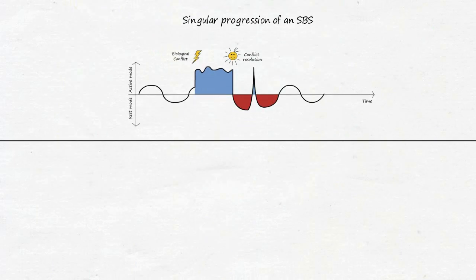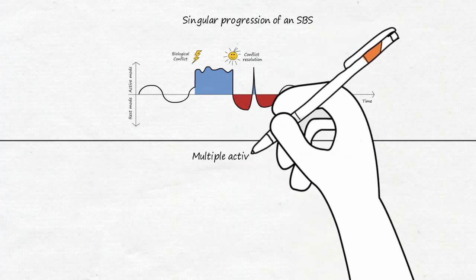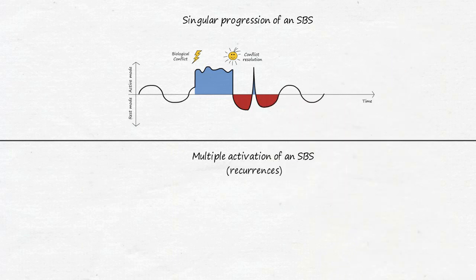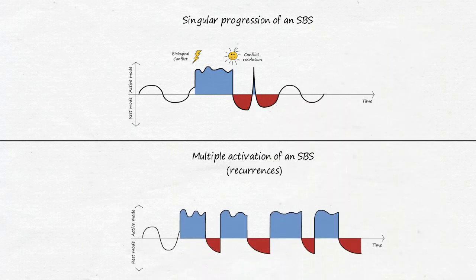Up until now, we have looked at the simple, singular progression, which is more of an exception for humans. With us, the multiple activation of a meaningful biological special program is a frequent and big problem. Since modern humans generally ignore our instincts and even our life skills hardly allow for flexibility and adaptation, an SBS often runs in an infinite loop. That is, we activate, resolve, activate, resolve, repeatedly for years on end.